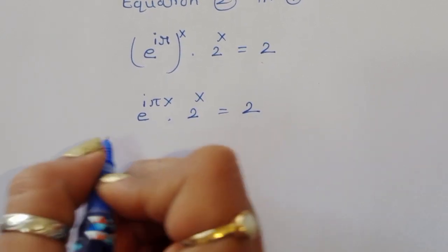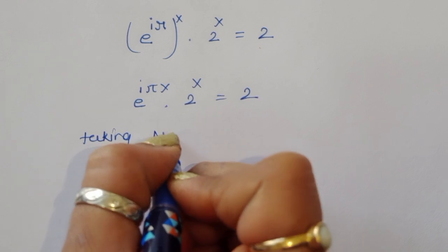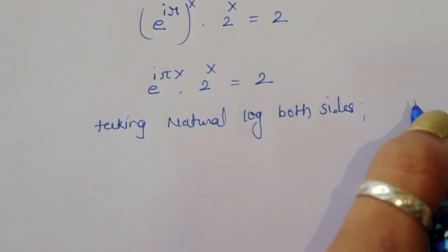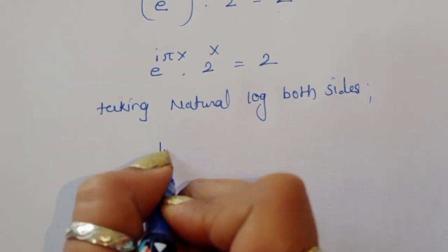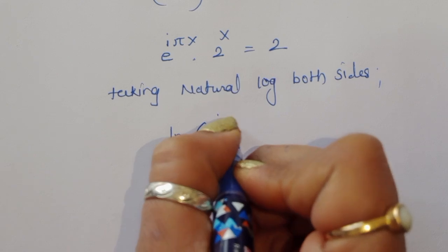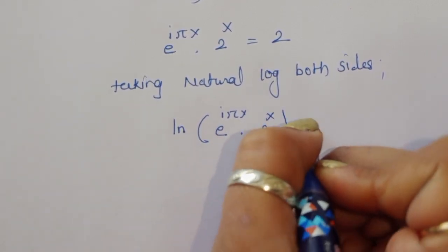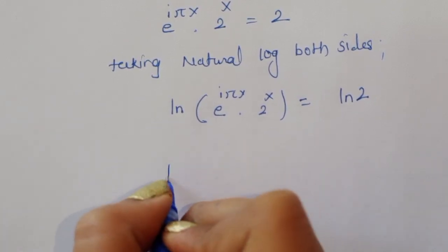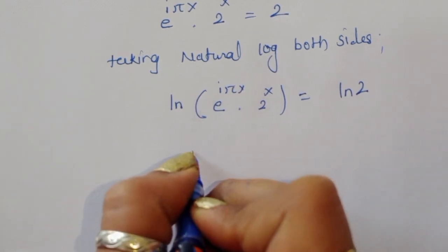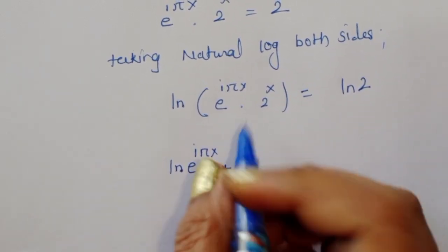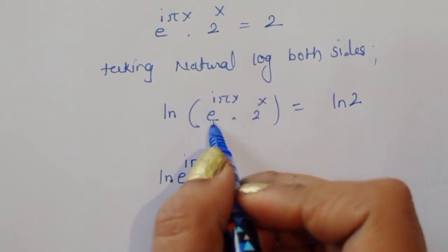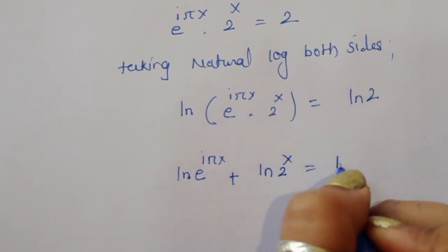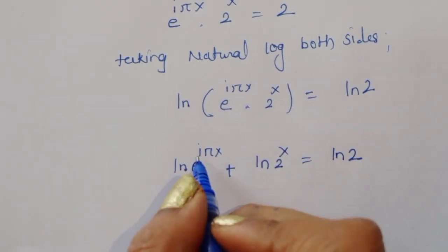Now taking the natural log on both sides: ln(e^(iπx) × 2^x) = ln 2. Since this is a product, we use ln(a·b) = ln(a) + ln(b), giving us ln(e^(iπx)) + ln(2^x) = ln 2.